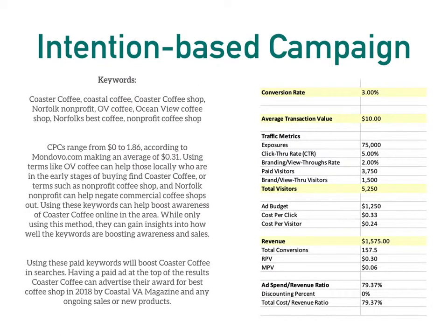For the intention-based campaign, we will pay for keywords such as Coaster Coffee, Coastal Coffee, Coaster Coffee Shop, Norfolk Nonprofit, OV Coffee — OV stands for Ocean View, the area where Coaster Coffee is located — Ocean View Coffee Shop, Norfolk's Best Coffee, and Nonprofit Coffee Shops. These will range from nothing to $1.86 each according to Mondovo.com, making the average about 31 cents per phrase. Using terms like OV Coffee can help those locally who are in the early stages of buying and trying to find Coaster Coffee, while terms like Nonprofit Coffee Shop and Norfolk Nonprofit can help negate commercial coffee shops. Using these keywords can help boost awareness of Coaster Coffee online in the area.